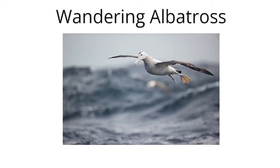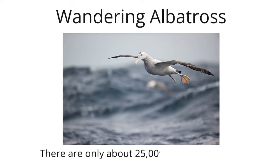Wandering Albatross: The wandering albatross has the widest wingspan of all living birds. On average, albatrosses have an 11-foot wingspan. Out of the 22 albatross species, 7 are vulnerable. The population of these birds is falling due to fishing activities that harm them. As of now, there are only about 25,000 wandering albatross in the wild.